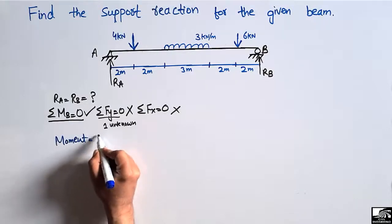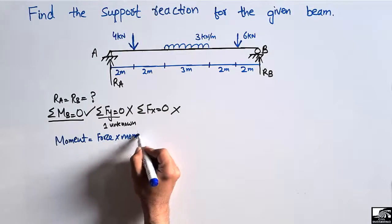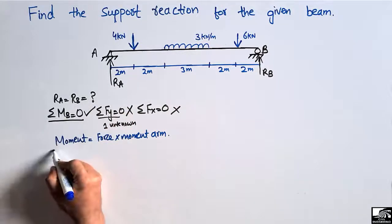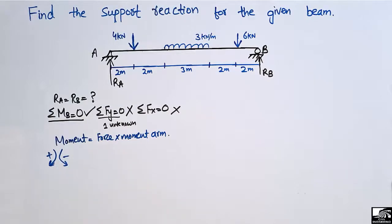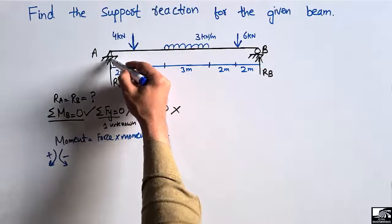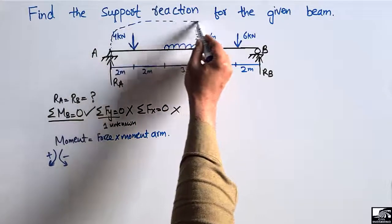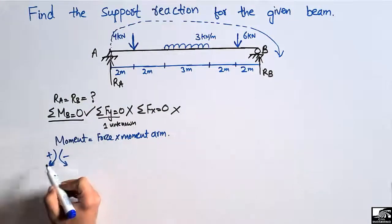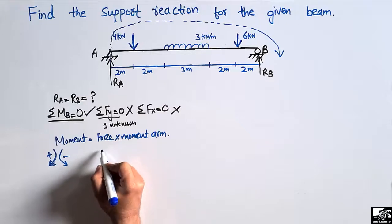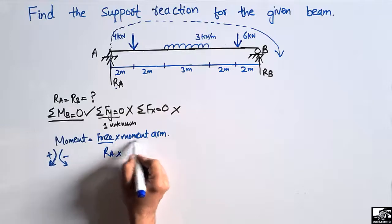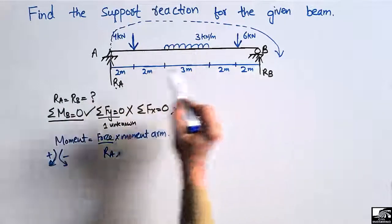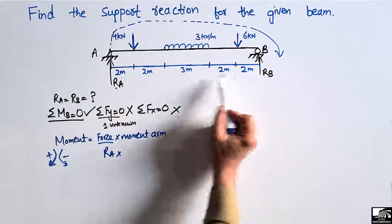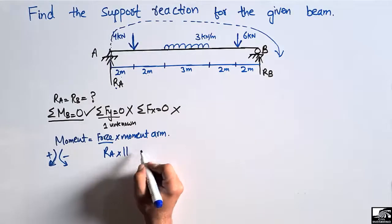Taking summation of moments about point B equal to zero. Clockwise moments are positive and anti-clockwise moments are negative. RA acts upward and creates a clockwise moment about B, so it is positive: RA multiplied by its moment arm, which is 2 + 2 + 3 + 2 + 2 = 11 meters. The 4 kN load acts downward, creating an anti-clockwise moment about B, so it is negative: minus 4 multiplied by its moment arm.